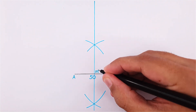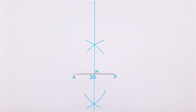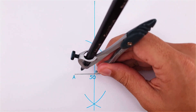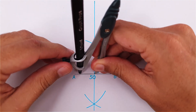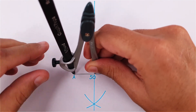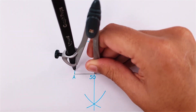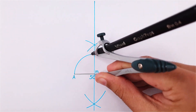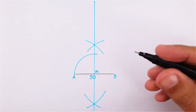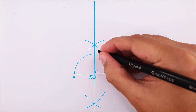Next, place your compass on your midpoint and adjust it to point A. Project point A onto your perpendicular bisector. Label the intersection as point 4.